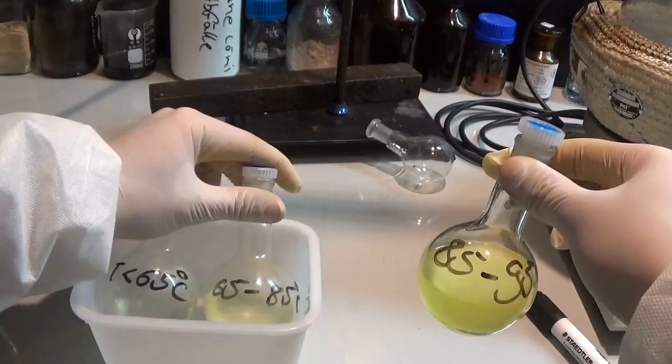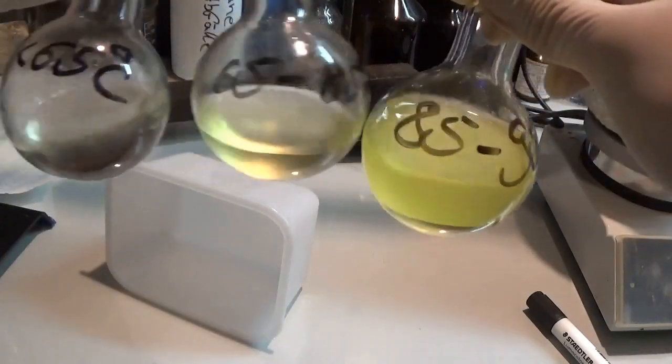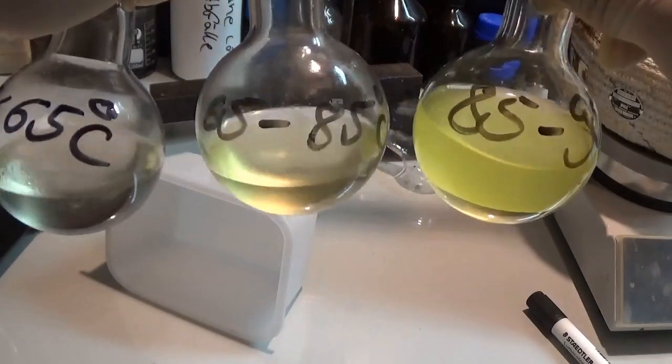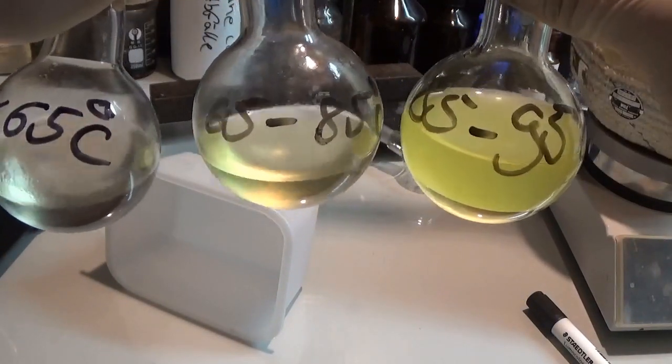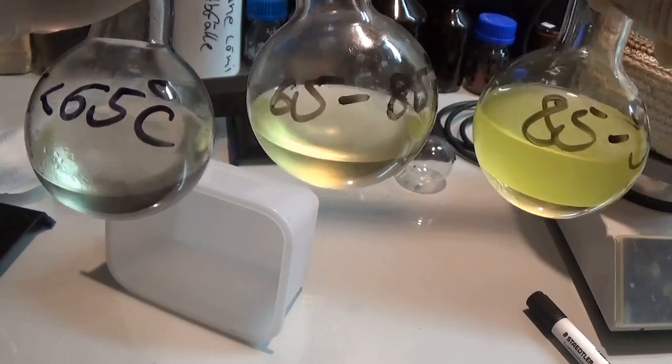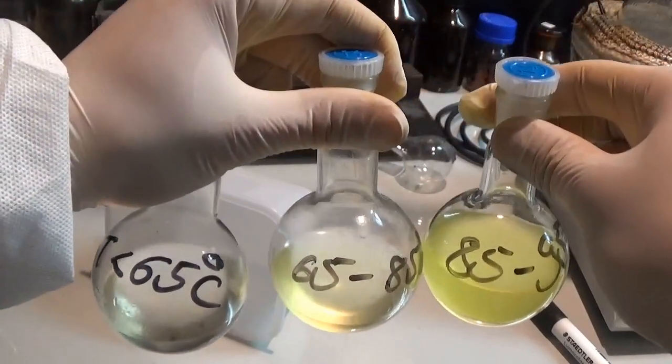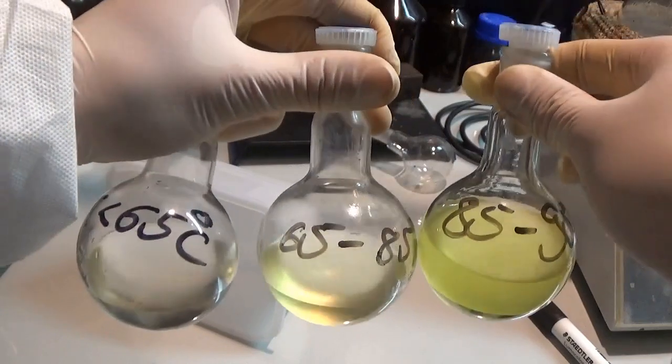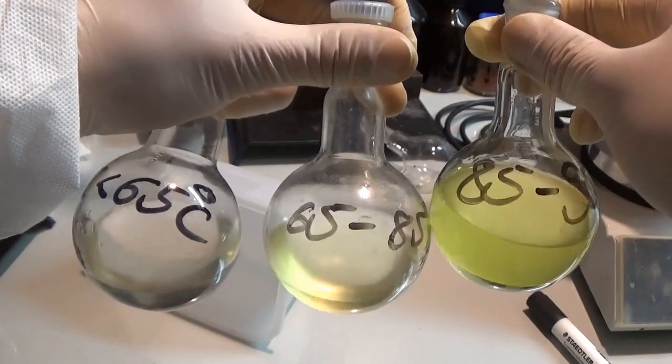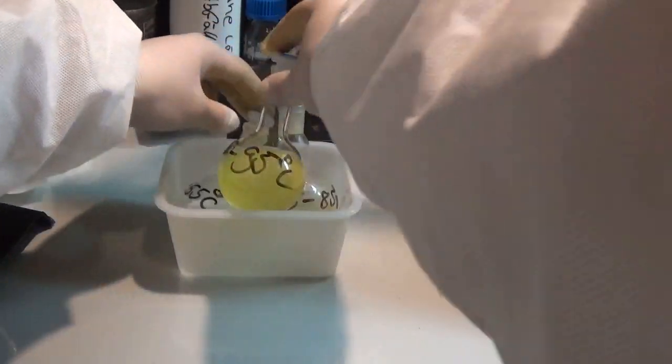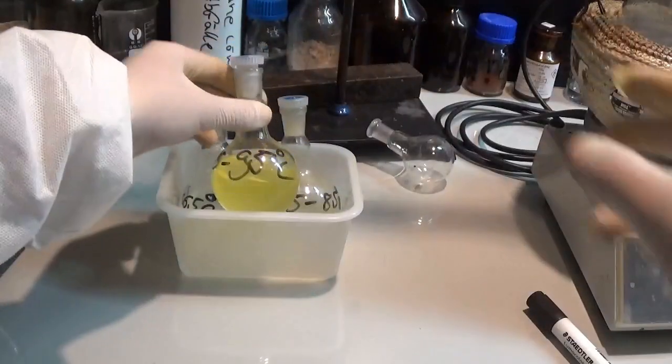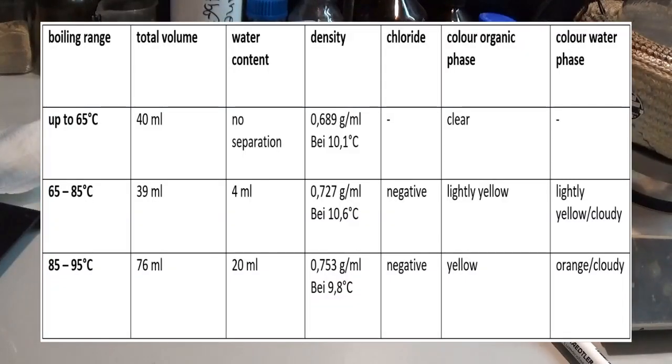Here you can see the different fractions and how they vary from each other in water content and color. All of these fractions were dried by first separating the organic and the water layer and then stirring the organic phase with 10 cubic centimeters of 3 angstrom molecular sieves to yield nice and clear hydrocarbon fractions which will be shown in a later video. Here are all the data I collected about these fractions.